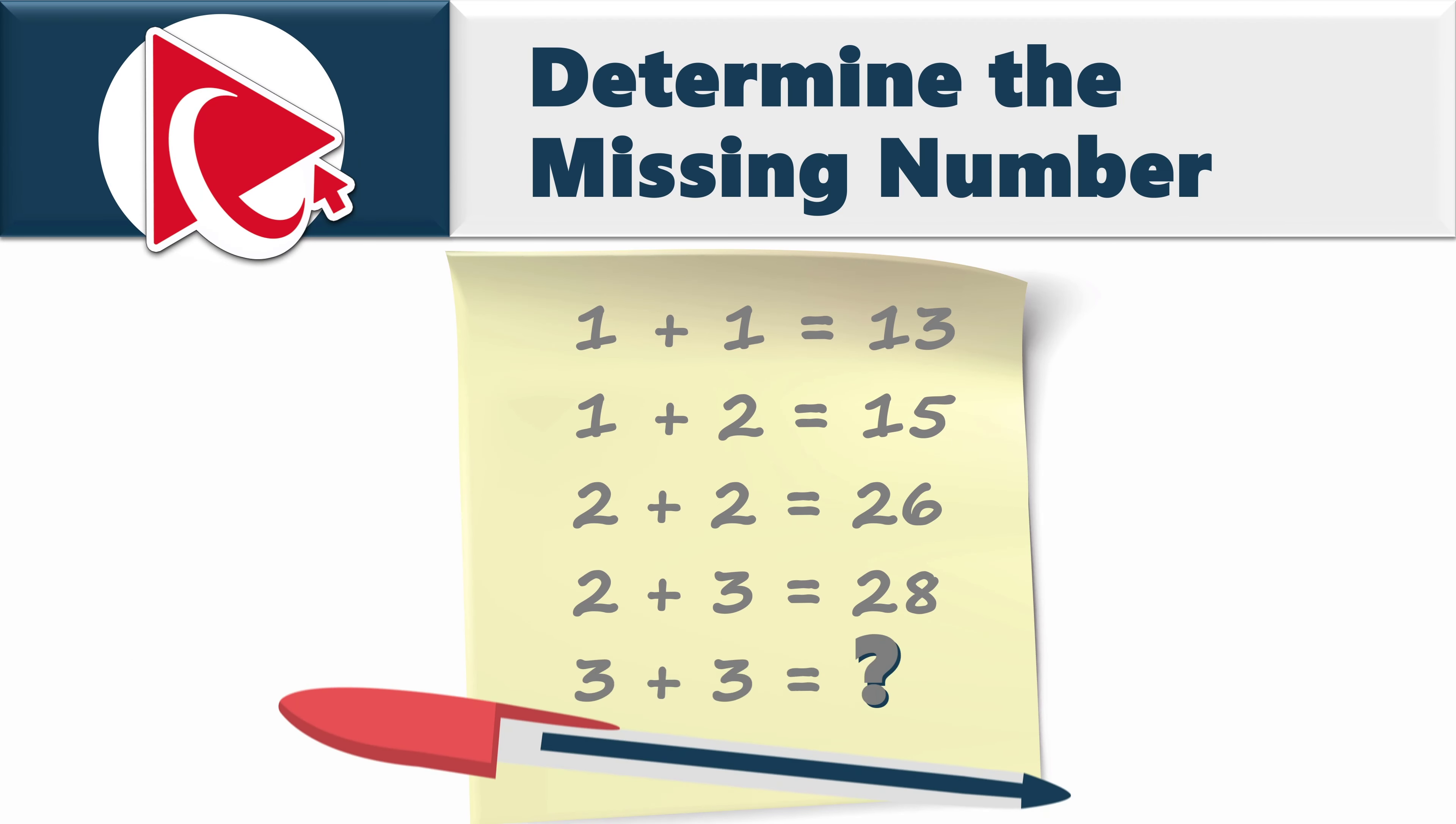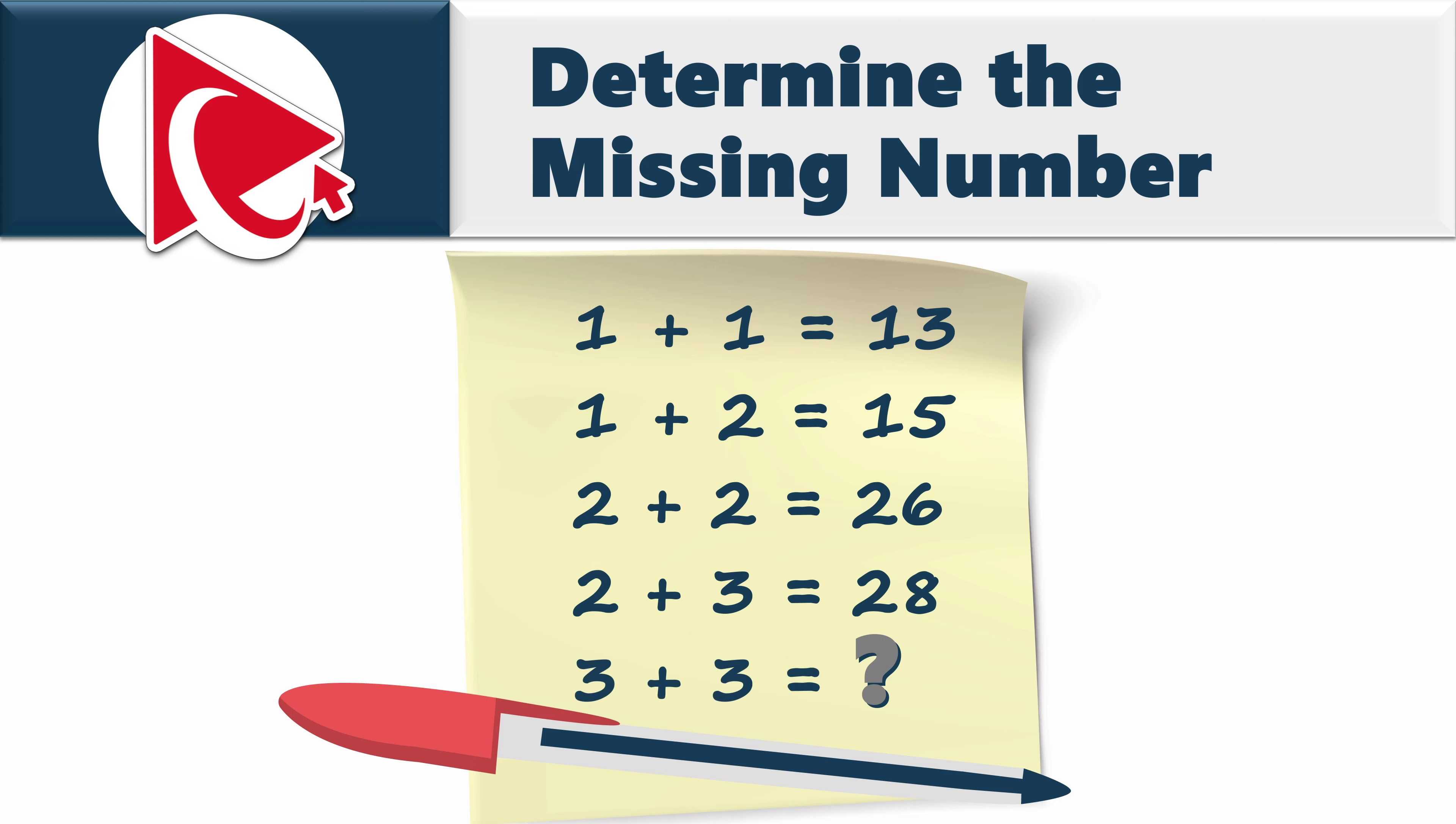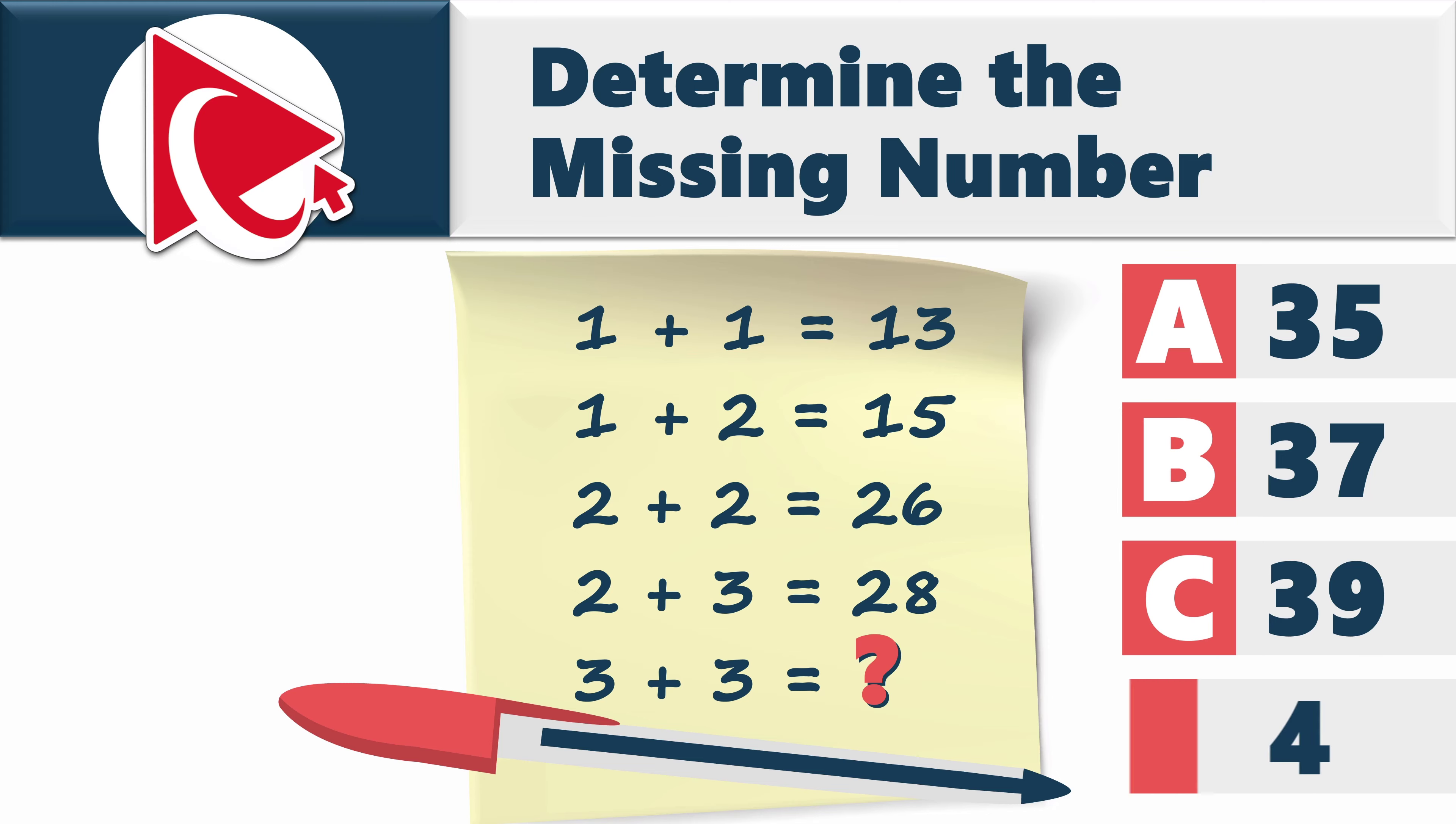You're presented with five mathematical equations. Well, those equations look unusual. The first equation is 1 plus 1 equals 13. 1 plus 2 equals 15. 2 plus 2 equals 26. 2 plus 3 equals 28. 3 plus 3 equals the missing number which you need to calculate and select out of four possible choices: A 35, B 37, C 39, and D 41.